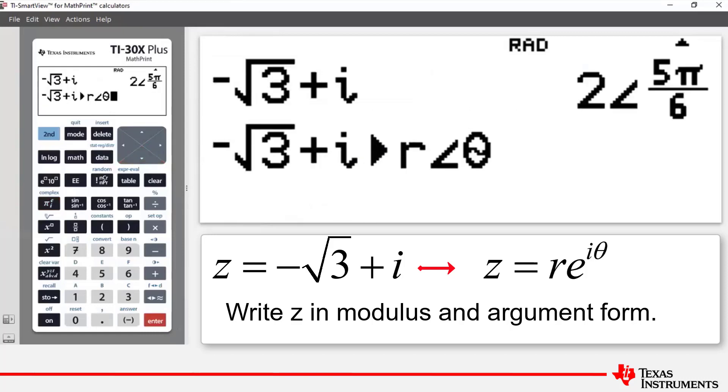We press enter to paste that onto the home screen. So basically it's saying we're going to take negative root 3 plus i and convert it into polar or modulus argument form. Press enter. And once again, we get that answer of 2e to the 5 pi i all over 6. So that's part A done.